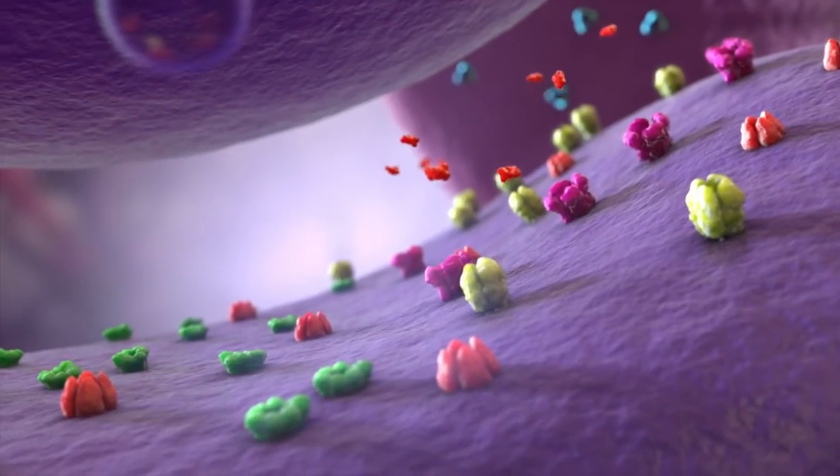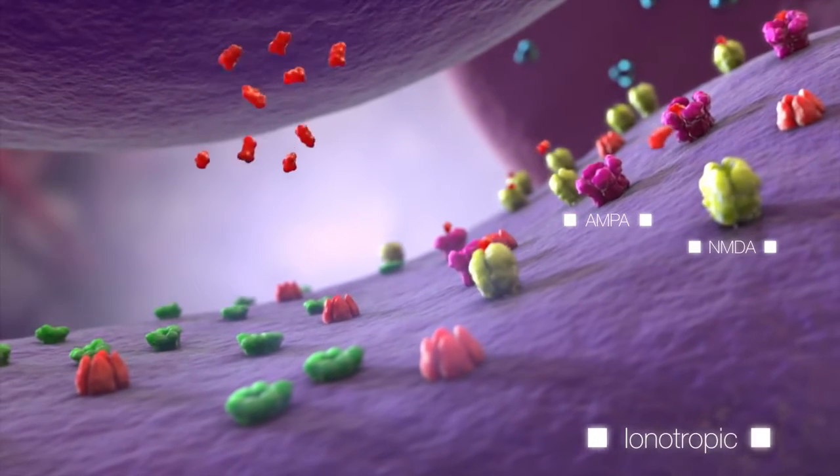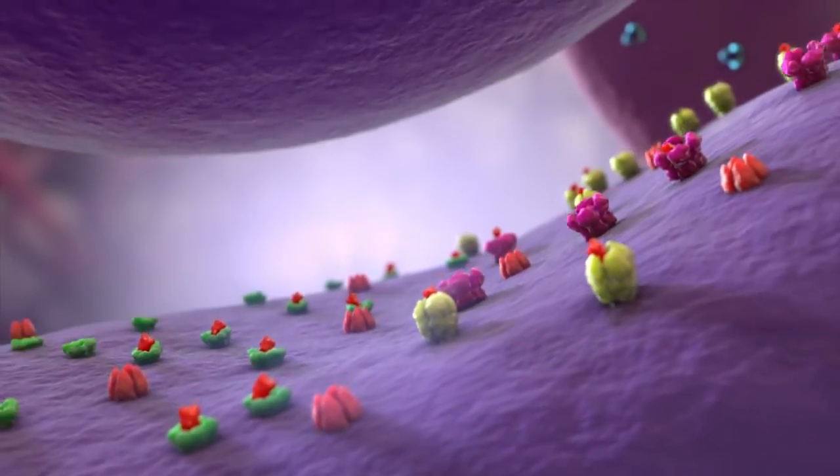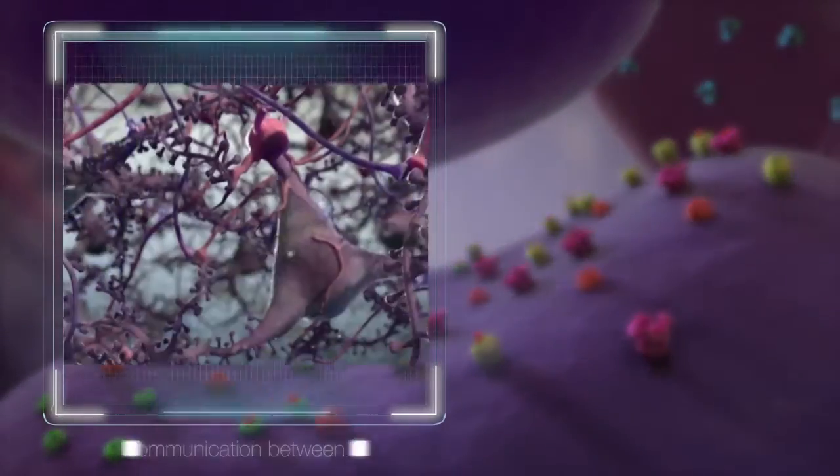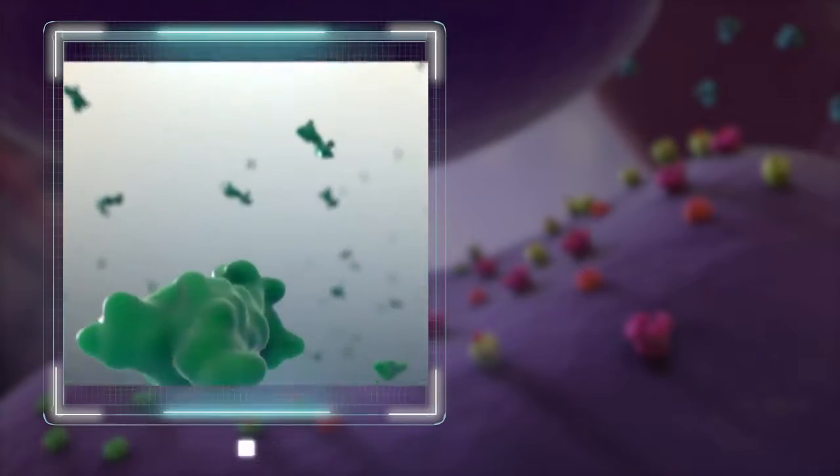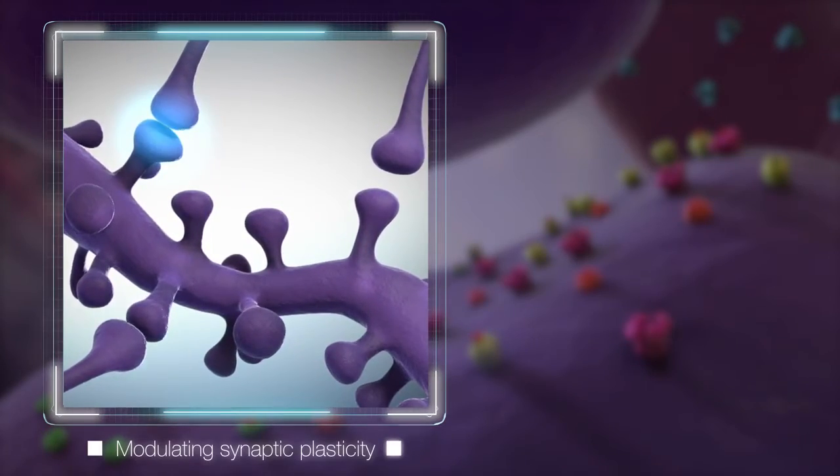Once released, glutamate can bind with several types of receptors, including post-synaptic ionotropic and metabotropic receptors that are responsible for a range of downstream effects, including initiating rapid communication between neurons, releasing brain growth factors such as BDNF, and modulating synaptic plasticity.